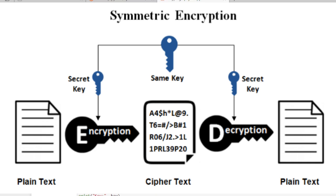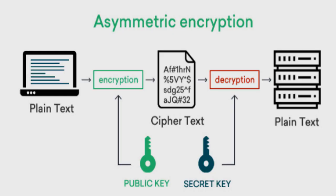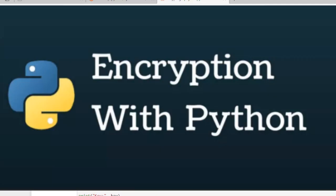Then there is public key cryptography, which uses two keys — one public and one private. It can use a public key to encrypt and a private key to decrypt, or a private key to encrypt and a public key to decrypt. All these techniques define the nature of the algorithm used to perform cryptography.